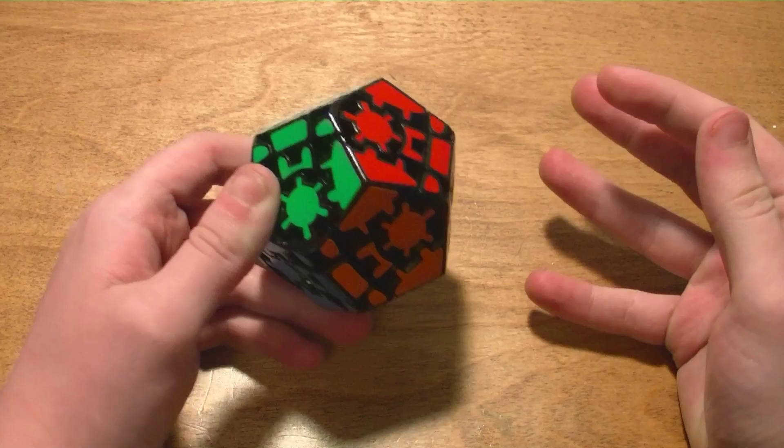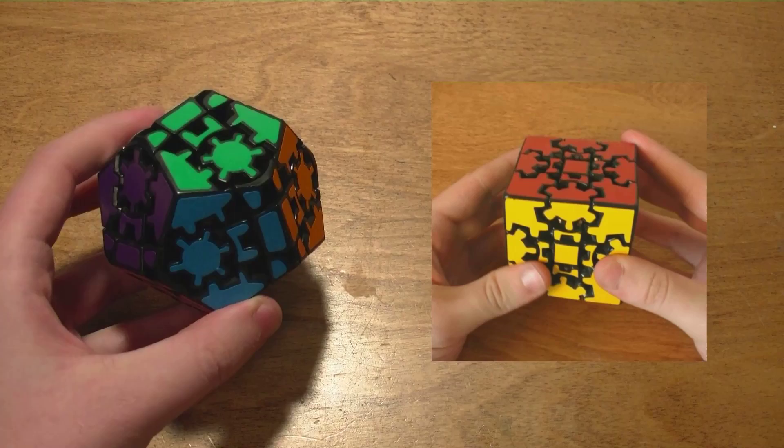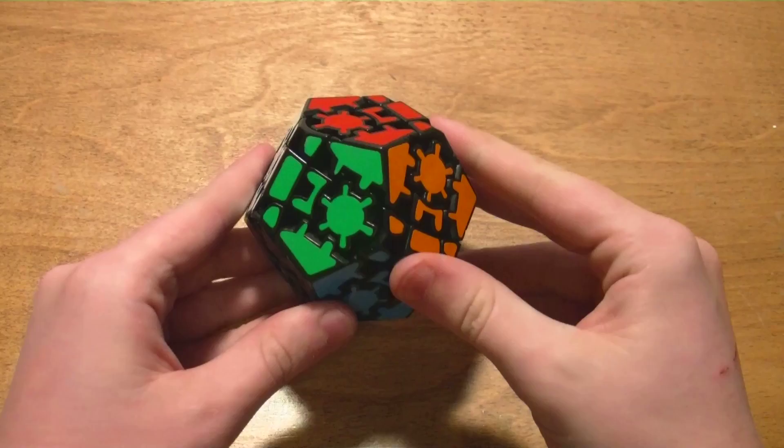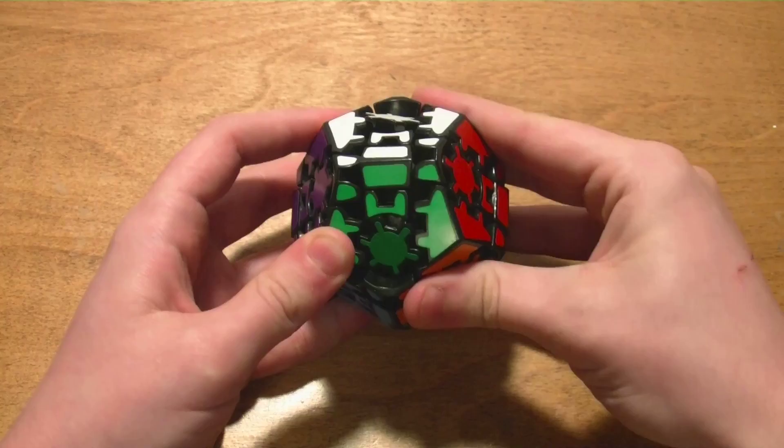So I took it apart and it actually uses the same mechanism as the gear cube. The only difference being is that it's just shaved down on all of the sides into a dodecahedron. So you have a lot of the same characteristics. You can turn this side over and over until all the sides match up and then the gears will be slightly rotated.